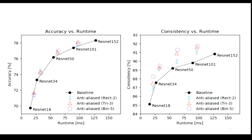Question: Why is the accuracy gain smaller as you go to larger networks? Answer: If you look at any factor — accuracy versus that factor — you'll probably see diminishing returns. This isn't just true of anti-aliasing; it's also true of adding layers. From ResNet 18 to ResNet 34 you add 16 layers; from ResNet 34 to ResNet 101 you add many more. It's diminishing returns as usual.